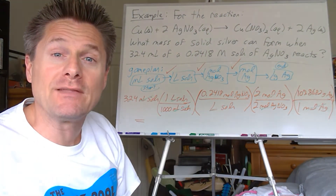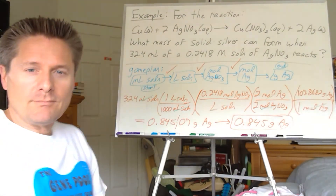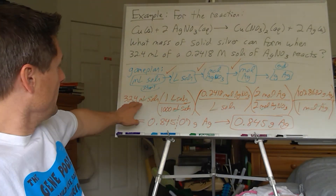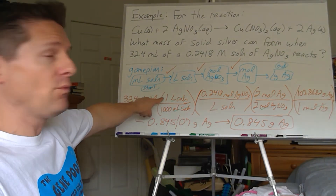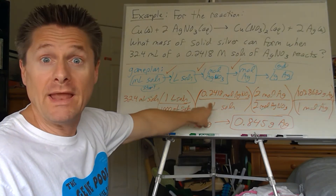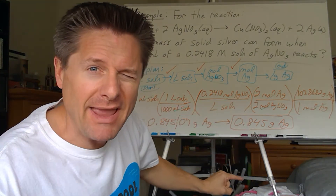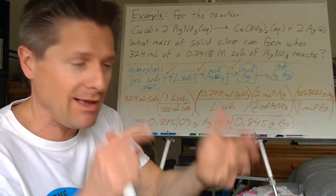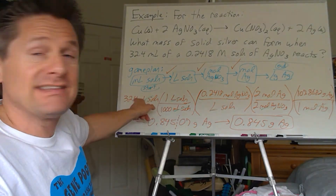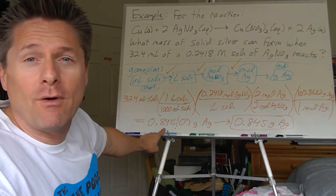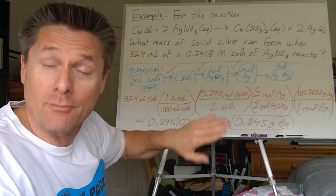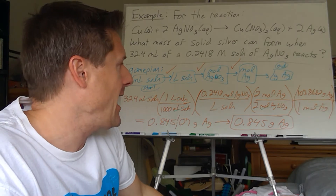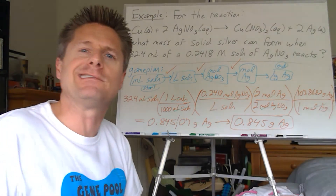Let's calculate: 32.4 × (1/1000) × 0.2418 × (2/2) × 107.8682 = 0.84507 grams of silver, good to three sig figs. So that rounds to 0.845 grams. We could express it as 845 milligrams if we wanted, but let's leave it in grams — it's a decent number.